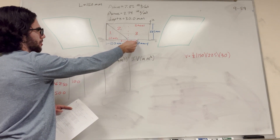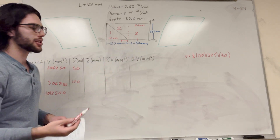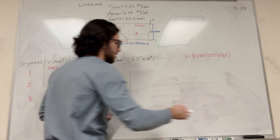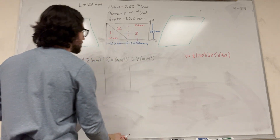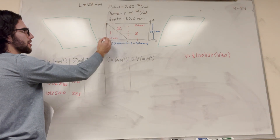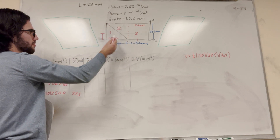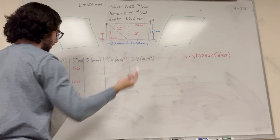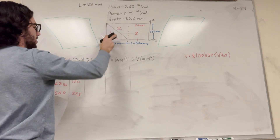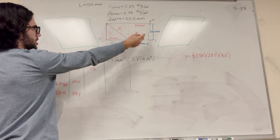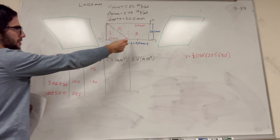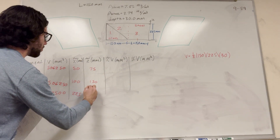Now let's do the z-center of mass. For segment one, the center of mass of the triangle is a third of the way up from the base, so one-third of 225 is 75 mm. For segment two, the upright triangle's center of mass is 150 mm. For segment three, the square's center of mass is halfway up, so half of 225 is 112.5 mm.